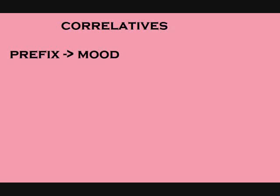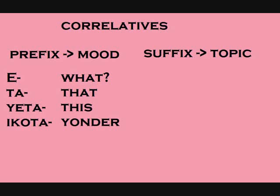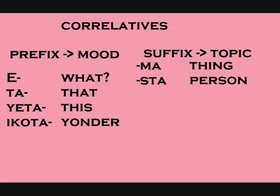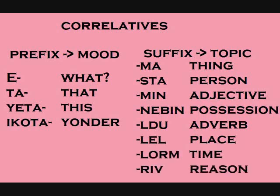Another concept you may be having trouble with is correlatives. All correlatives are made up of two parts: a prefix determining the mood and a suffix determining the topic. The prefixes learned so far are: 'e-' for question or 'what' words, 'ta-' for demonstrative or 'that' words, 'yeta-' for near demonstrative or 'this' words, and 'ikota-' for far demonstrative or 'yonder' words. These prefixes attach to suffixes: '-ma' for things, '-sta' for people, '-min' for adjectives, '-nebin' for possession, '-loo' for adverbs, '-lel' for places, '-lorm' for times, and '-reeve' for reasons.